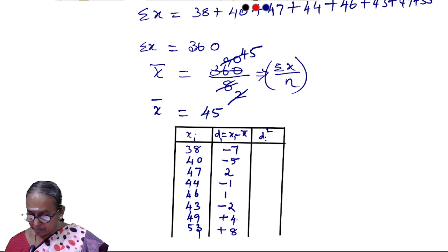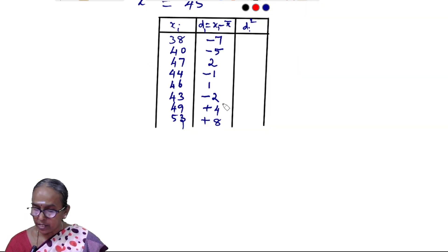We square each deviation: 49, 25, 4, 1, 1, 4, 16, 64.